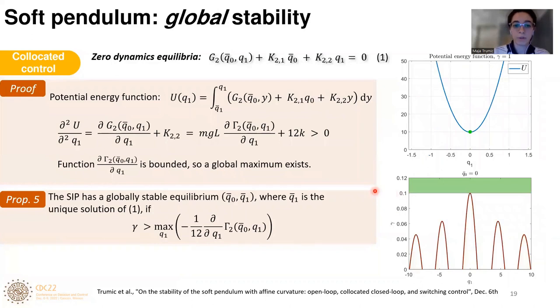Moreover, we can also find the condition when we have satisfied global stability. In this case, we need to have a second derivative that is greater than zero for all Q1. It is reflected in this condition written here, basically in this region painted in a darker green color.